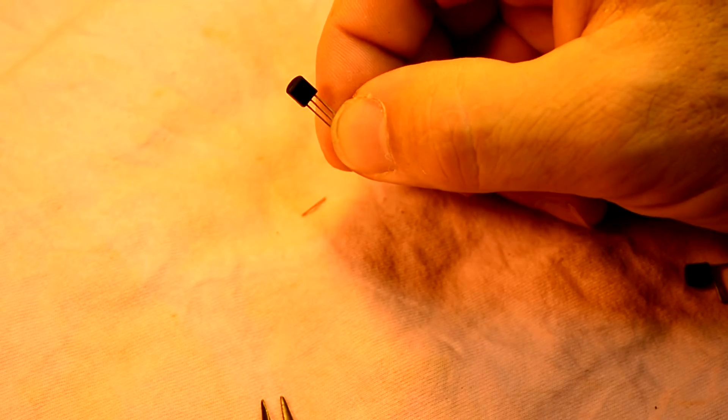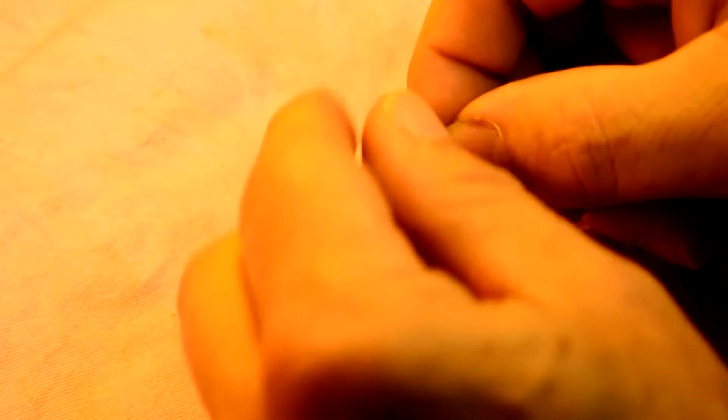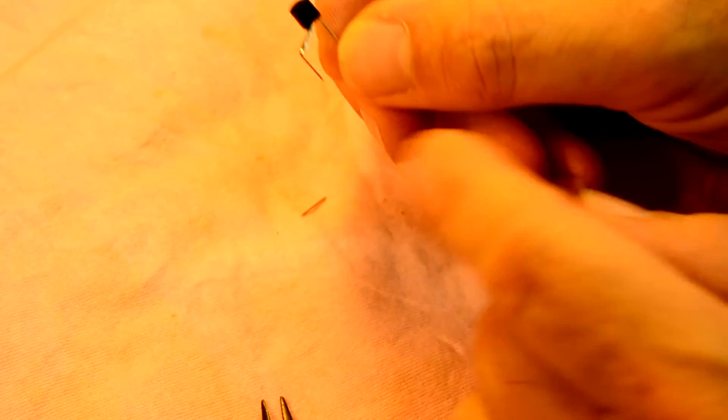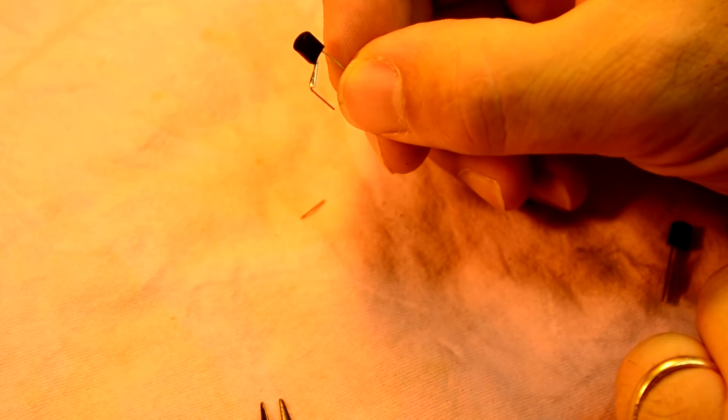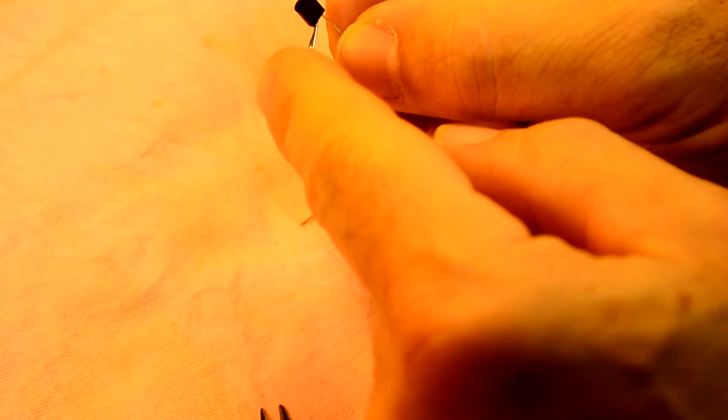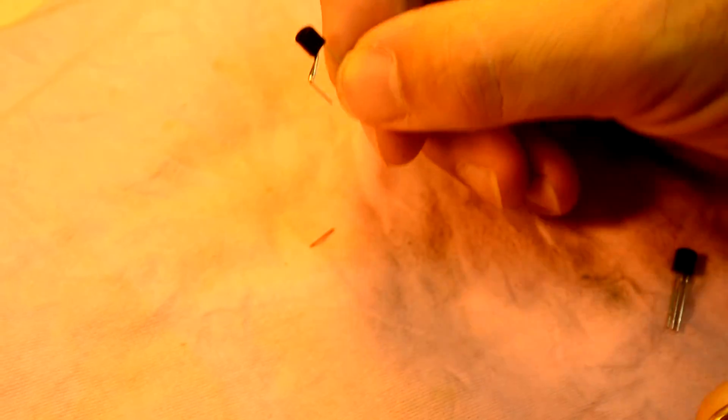This is a normal 2N 5457 FET transistor and we want to turn it into this which has two legs which would replace a LED or a diode for clipping. This end would be the end with the stripe on it. That's how you would install it.